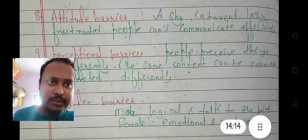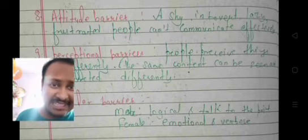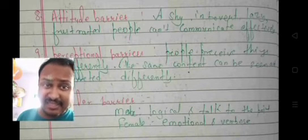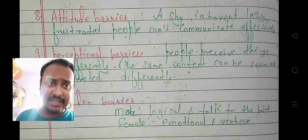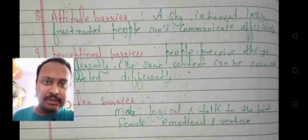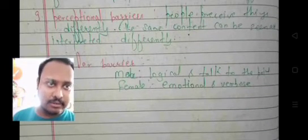Attitude barrier: introvert, lazy, or frustrated people cannot communicate effectively. The next is perceptional barrier — people perceive things differently; the same content can be seen or interpreted differently.